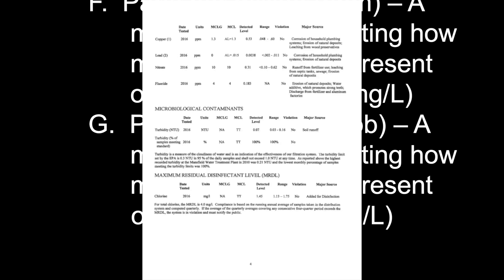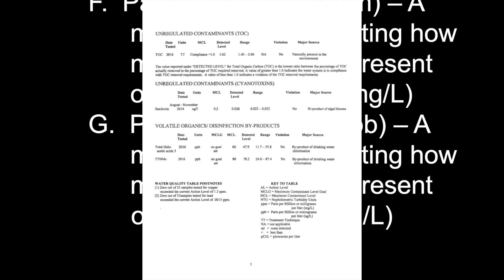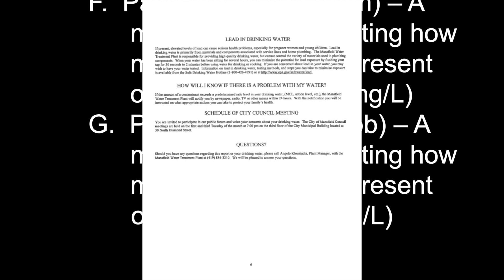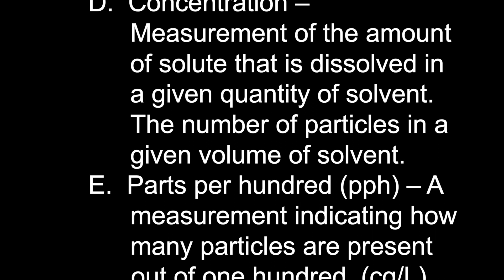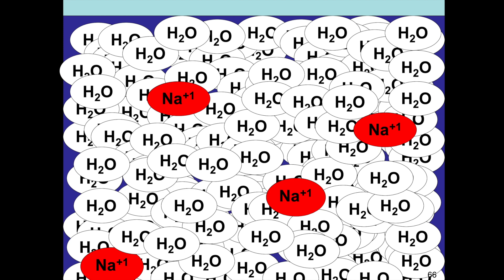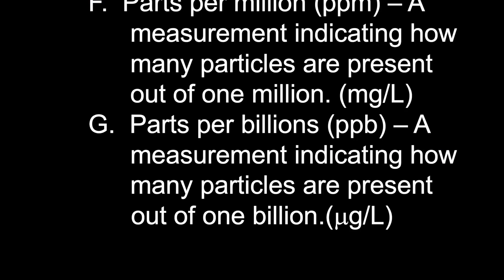If bacteria levels get too high, they'll tell people to boil the water before using it. Parts per hundred is more typically used for air particles — like pollen or poisonous gas. Parts per million and parts per billion are typically used for solutions dissolved in a liquid.